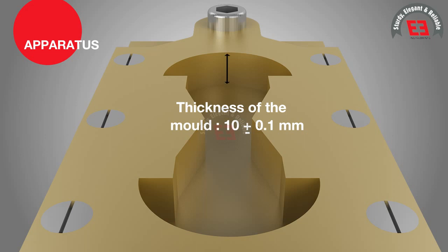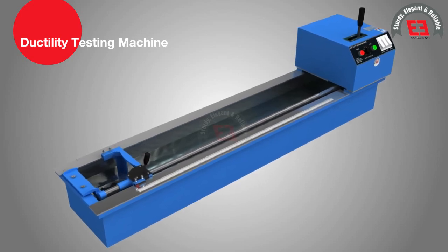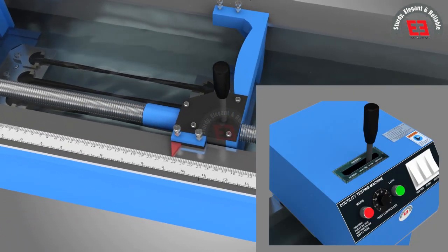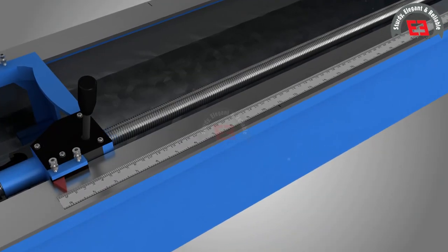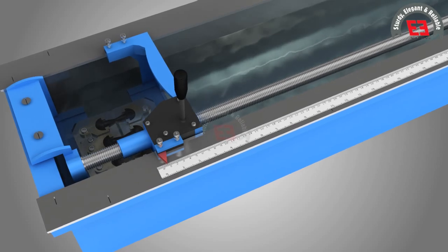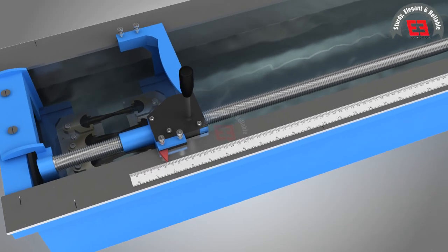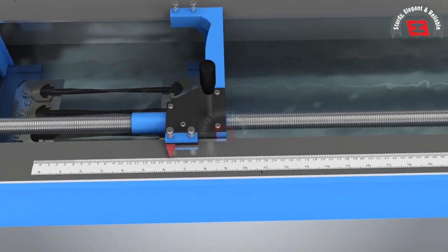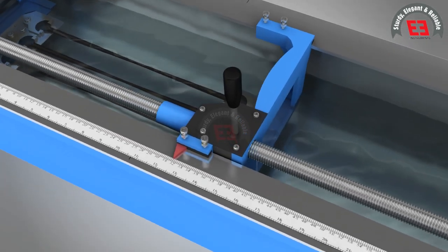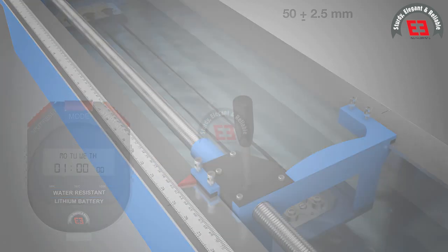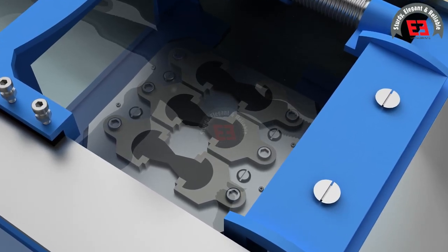Thickness of the mold 10 mm plus or minus 0.1 mm. Ductility testing machine: This apparatus is a constant water bath type with a pulling device at a pre-calibrated constant speed of 50 mm per minute and 10 mm per minute. The central rod of the machine is threaded and through a gear system provides movement to ductility molds, the clip of which is fixed at one end while the second clip stretches the thread of bitumen binder away from the first clip. Two clips are thus pulled apart horizontally at a uniform speed of 50 mm per minute, plus or minus 2.5 mm per minute. The machine has a provision to fix three ductility molds at a time.